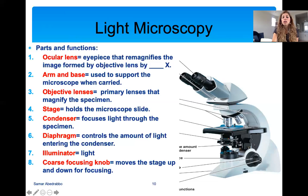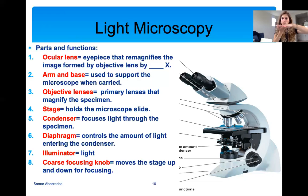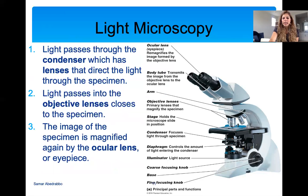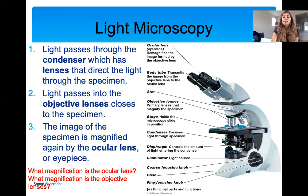There is a coarse focusing knob, which is the big one, and the fine focus knob, which is the small one. The coarse focus knob moves the stage up and down — you use it to get the slide as close to the objective lens as possible. Then when you're close to the objective lens, you use the fine focus knob to sharpen the image. Light passes through in this order: light source, condenser, specimen, objective lens, ocular lens, and then you can see your slide.